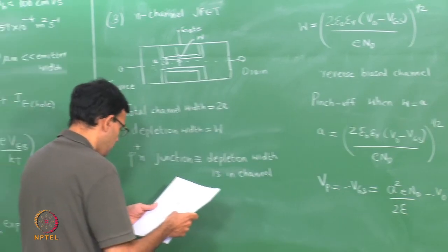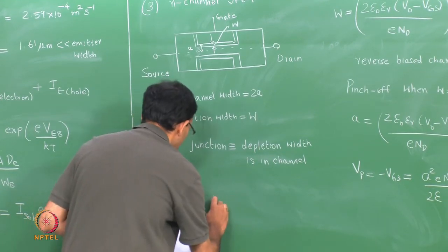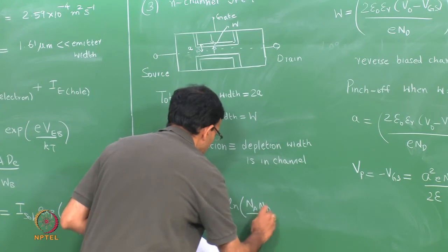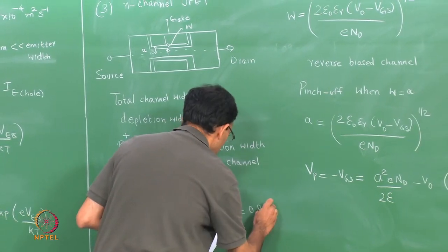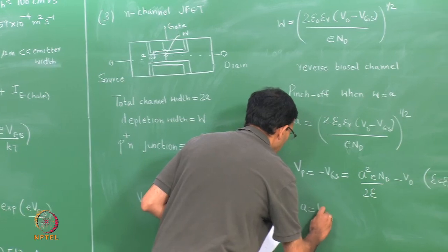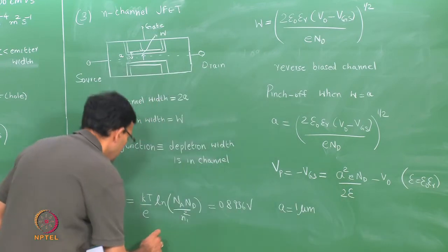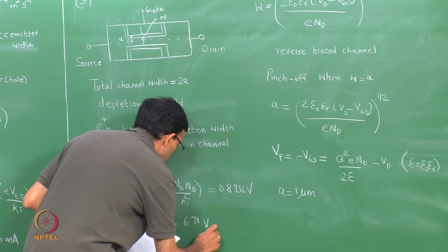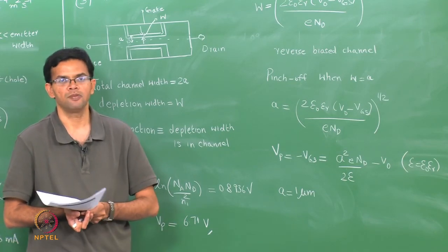For this numerical problem, N_A and N_D are given. We calculate V₀ = (kT/e)·ln(N_A·N_D/n_i²) = 0.8936 volts for silicon. With A = 1 micrometer, we can calculate V_P = 6.71 volts. This represents the pinch-off voltage needed to close the N-channel and stop conduction in the JFET.